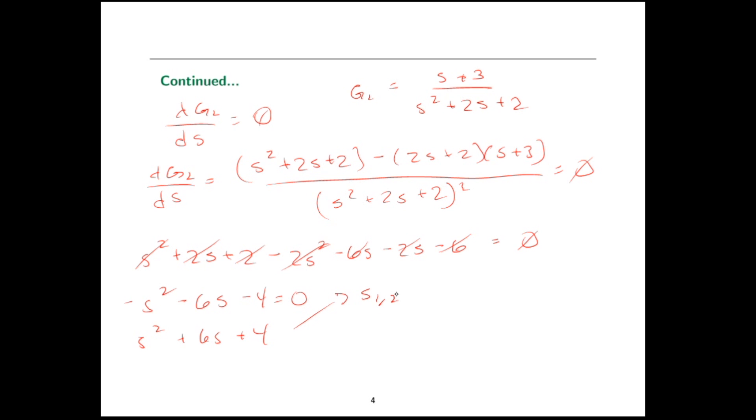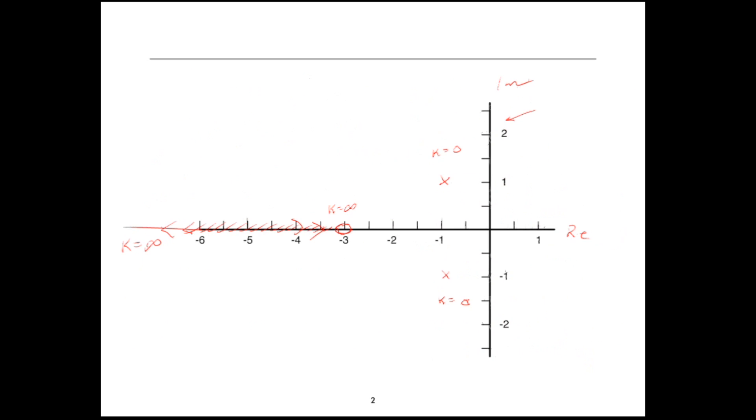I'll do that up here. s1,2 equals negative 6 plus minus square root of 36 minus 16 over 2 and I get negative 3 plus minus square root of 5 and the two roots are, let's see, that's about negative 0.76 and negative 5.24. Great. So, those are my two options for break-in points. Let's take a look at that grid again and see which one makes sense. I had negative 0.76 and negative 5.24. Well, this one doesn't make any sense because there's no root locus right about there. However, the other one negative 5.24 makes a lot of sense. So, there is our break-in point.